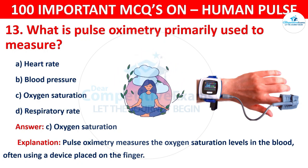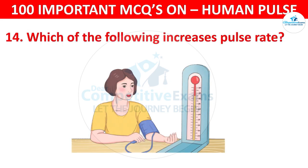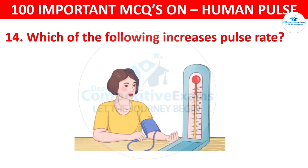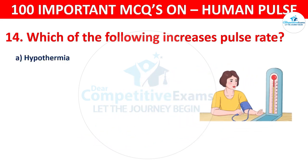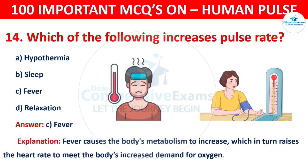Question number 14: Which of the following increases pulse rate? Options are: Hypothermia, Sleeping, Fever, or Relaxation. The correct answer is C, that is fever. Fever causes the body's metabolism to increase, which in turn raises the heart rate to meet the body's increased demand for oxygen.